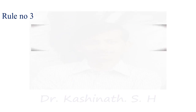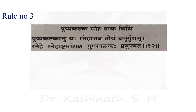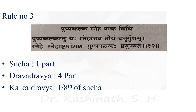Rule number three: Pushpa Kalka Sneha Paaka Vidi. If in any formulation a Pushpa (flower) is indicated as Kalka, then the quantity of Drava Drava is four parts to that of Sneha (which is one part as usual), and the quantity of Kalka Drava will be one-eighth to that of Sneha Drava.